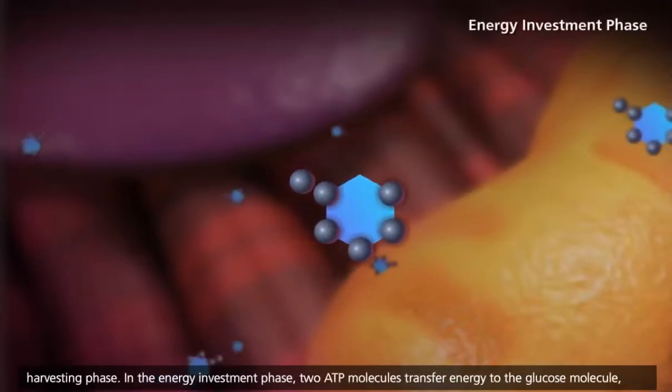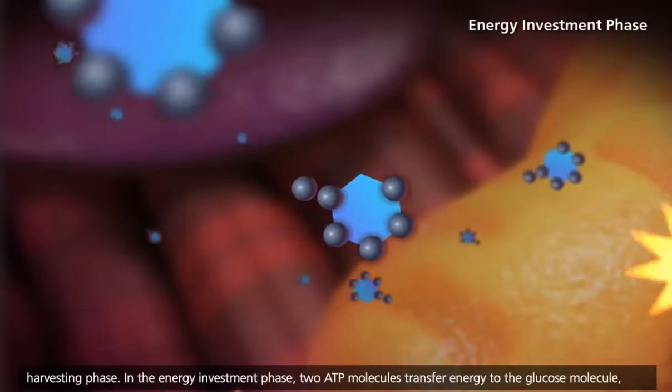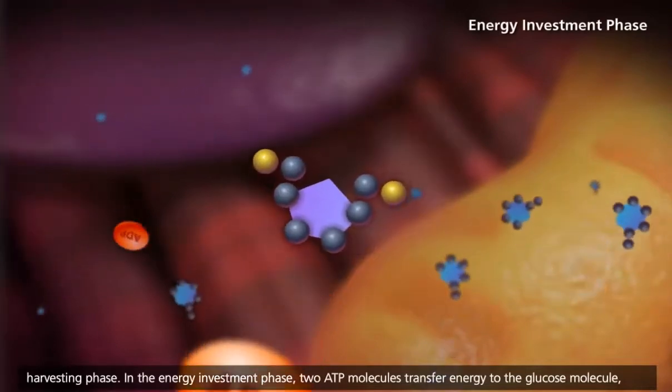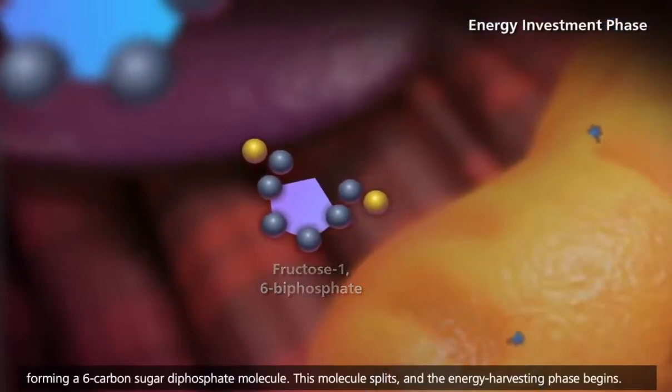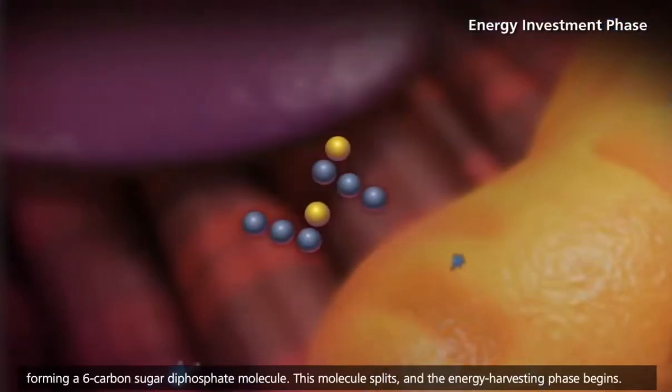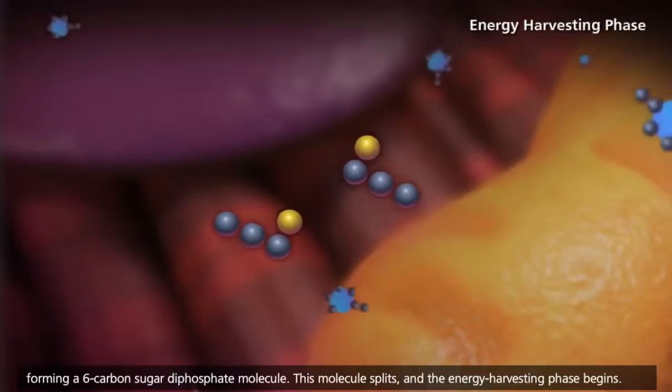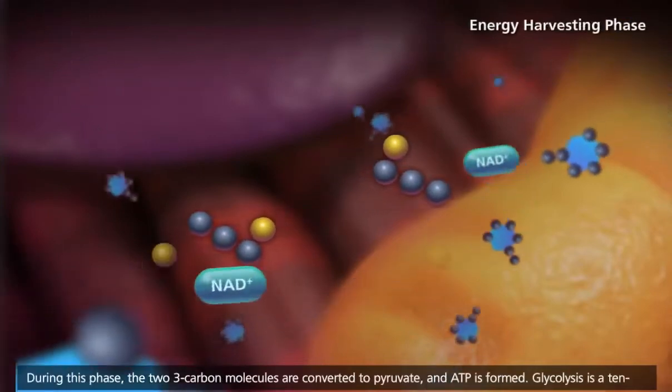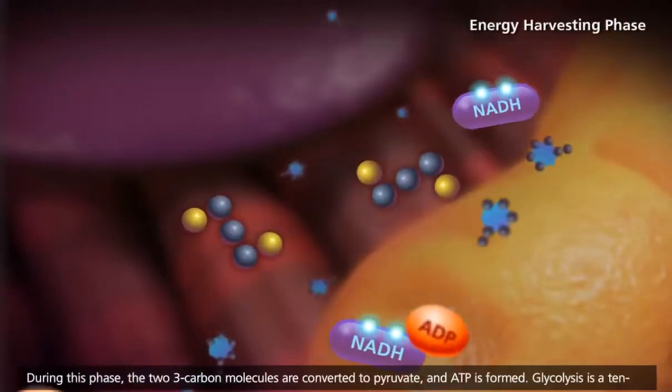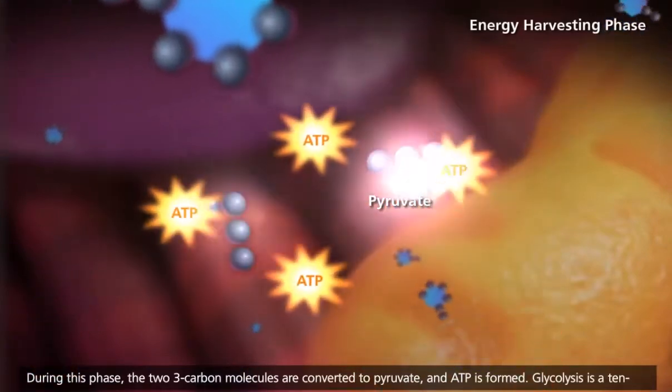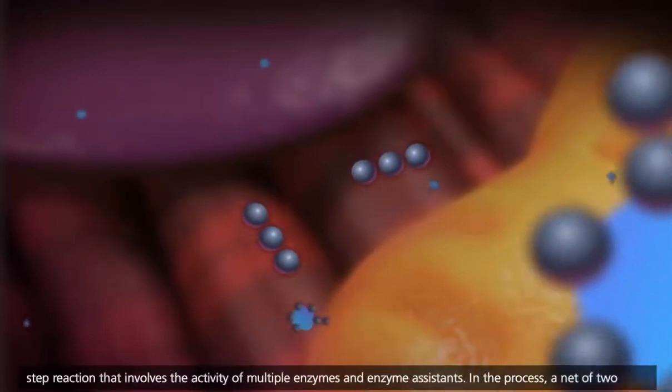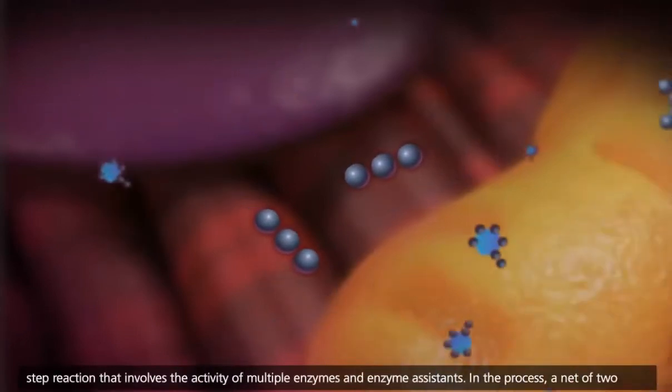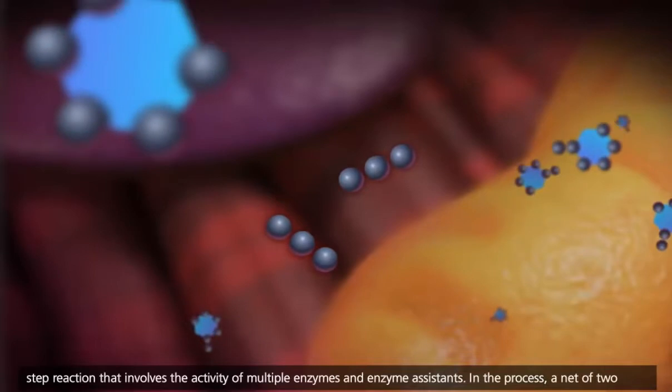In the energy investment phase, two ATP molecules transfer energy to the glucose molecule, forming a six-carbon sugar diphosphate molecule. This molecule splits, and the energy harvesting phase begins. During this phase, the two three-carbon molecules are converted to pyruvate, and ATP is formed. Glycolysis is a ten-step reaction that involves the activity of multiple enzymes and enzyme assistances.